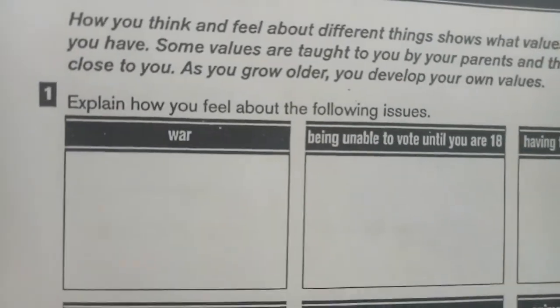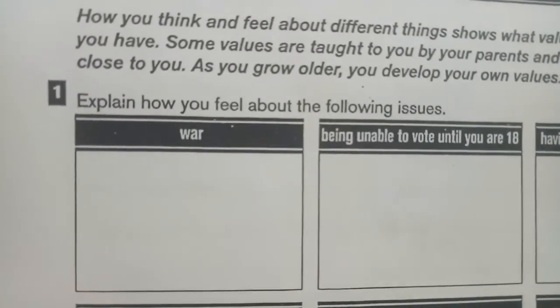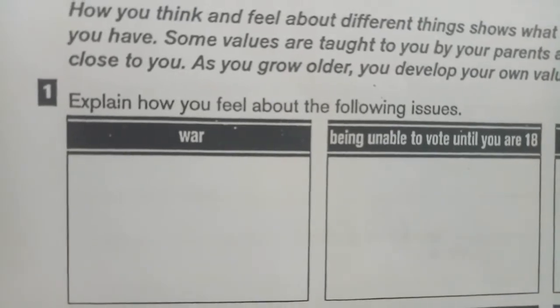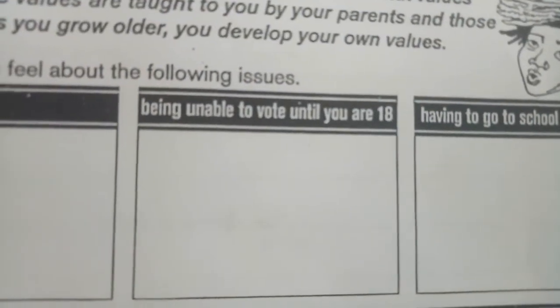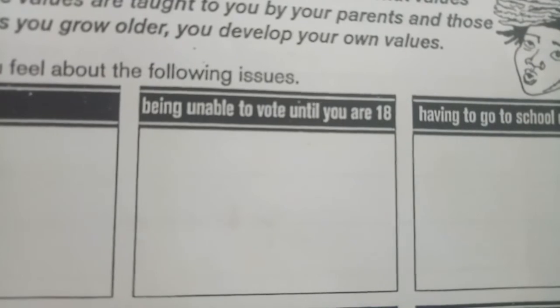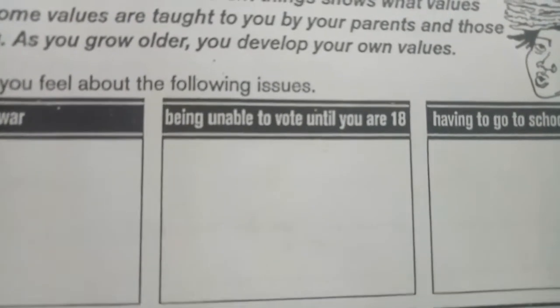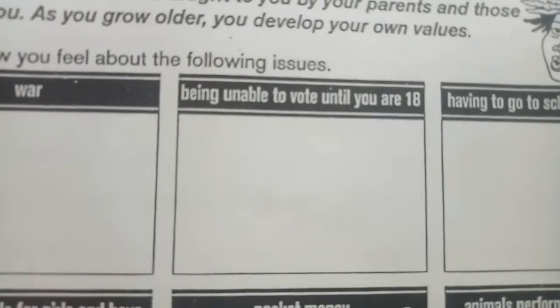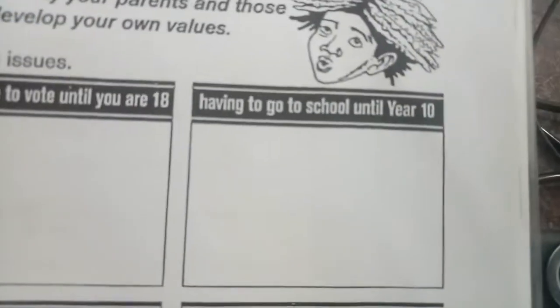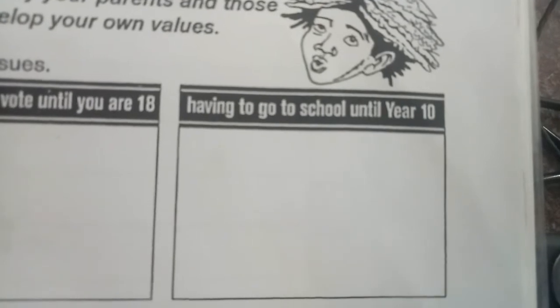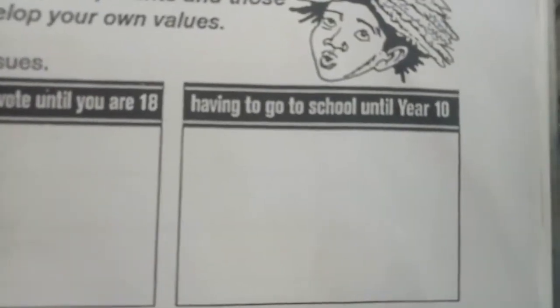Now let's look at number one: explain how you feel about the following issues. You have to write your feeling. First, about war — tentang perang, menurutmu perang itu gimana? And then, being unable to vote until you are 18 — tidak bisa mengikuti pemilu sampai kamu berusia 18 tahun, itu perasaanmu bagaimana?